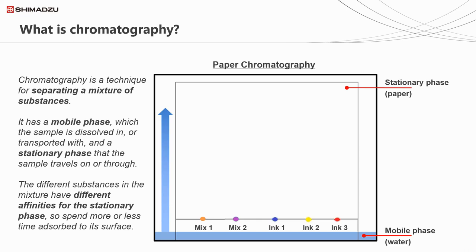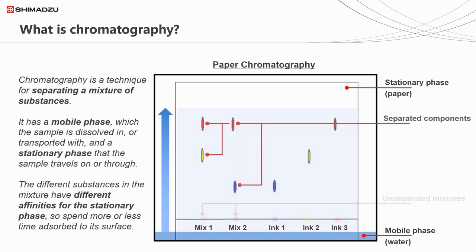In this example, the analyst has laid out a series of chemicals on the paper - they've spotted them onto the bottom of the paper. We have two mixtures of chemicals, which could be your samples, and then three individual inks also laid on the paper. What will happen is, over time, these mixtures will get picked up by the water as it soaks up the paper and will be separated out. Some of the inks with a greater affinity to the mobile phase will move up the paper more quickly, and the ones with more affinity to the stationary phase will move more slowly.